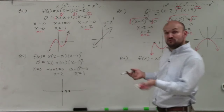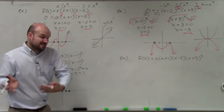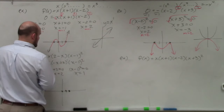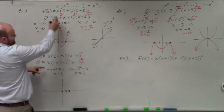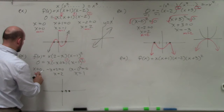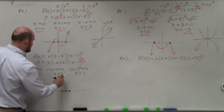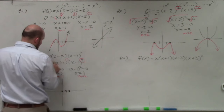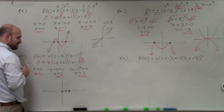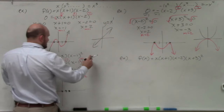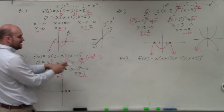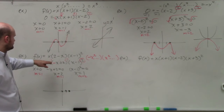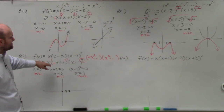Now let's identify the multiplicity. When the power of a factor is 1 (odd multiplicity), the graph crosses. When the power is 2 or any even power, the graph bounces. The factor (negative x + 2) has power 1 — multiplicity 1, crosses. The factor x is like (x minus 0) to the first power — multiplicity 1, crosses. The factor (x minus 1) squared has multiplicity 2 — bounces. The end behavior: x times negative x gives negative x squared; times (x minus 1) squared gives negative x to the fourth — fall left, fall right.